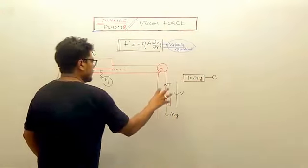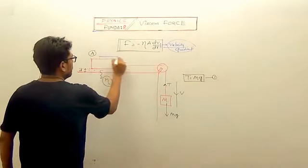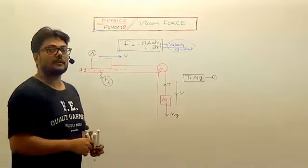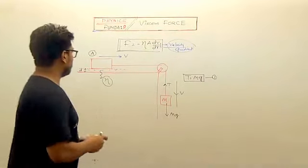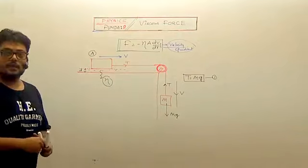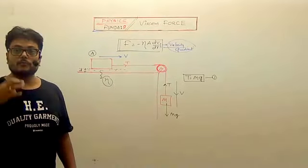If this block is moving with constant velocity, the connected block will also move with the same constant velocity. Since there is tension T here, and the pulley is massless, tension will be the same on both sides.